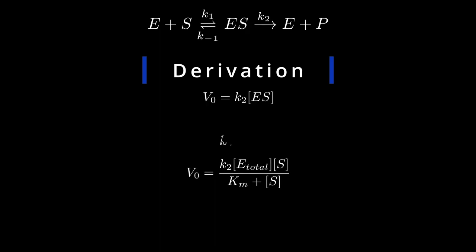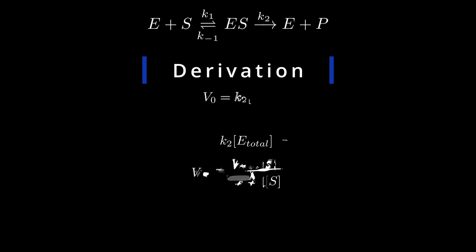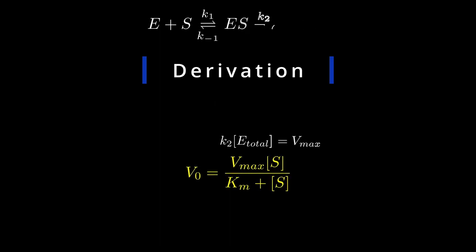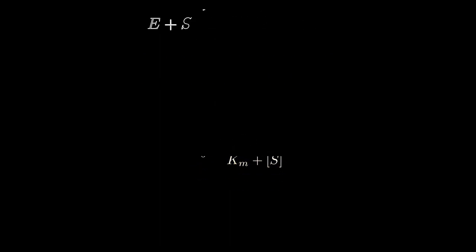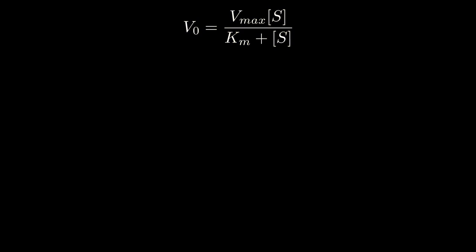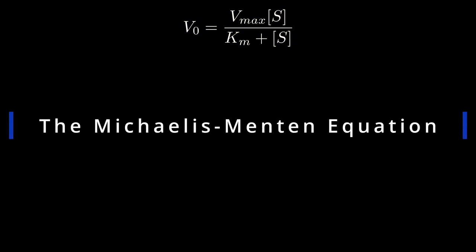Notice that this expression implies that every enzyme is used in the second reaction. In other words, the enzyme is completely saturated. This means that the enzyme is operating at maximum rate Vmax. We finally arrive at the end of our derivation journey. This equation we just derived is called the Michaelis-Menten equation.